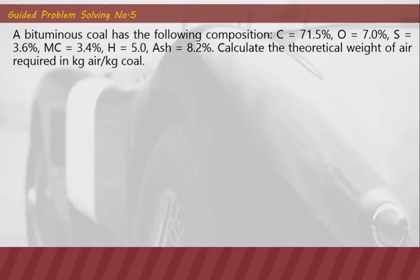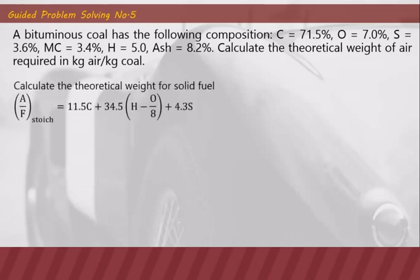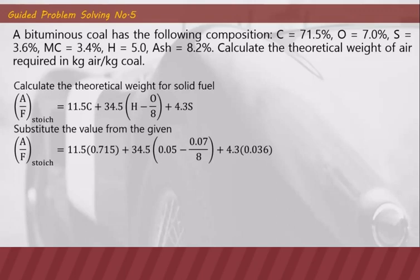Guided problem solving number five: a bituminous coal has the following composition — carbon 71.5%, oxygen 7%, sulfur 3.6%, moisture content 3.4%, hydrogen 5%, ash 8.2%. Calculate the theoretical weight of air required in kg-air per kg-coal. Using the stoichiometric air-fuel ratio formula for solid fuel — 11.5C + 34.5(H − O/8) + 4.3S — and substituting decimal values, the stoichiometric air-fuel ratio is 9.8 kilograms of air per kilogram of fuel.